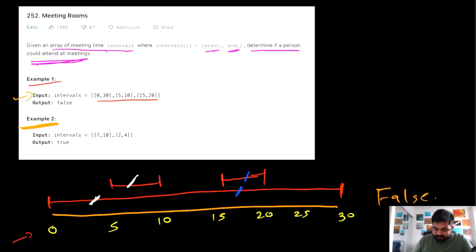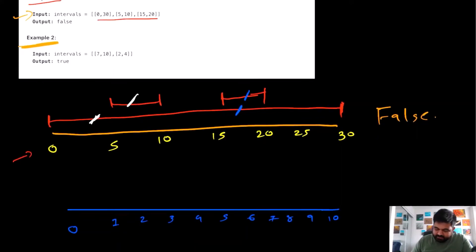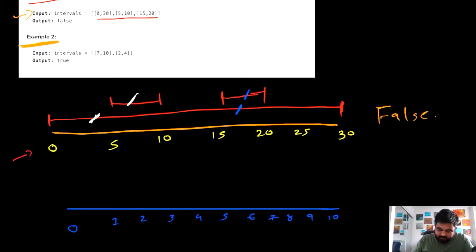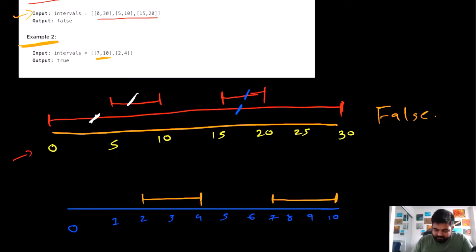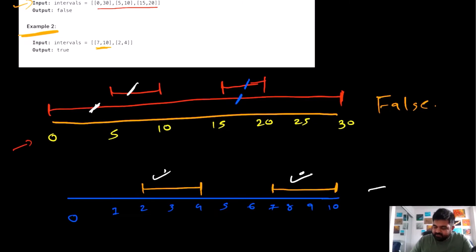In the second example, we plot on a number sequence. There is one meeting that starts at 7 and ends at 10, and a second meeting that starts at 2 and ends at 4. We can clearly see it's possible for one person to attend the first meeting and then attend the second meeting, so in this case we return true.